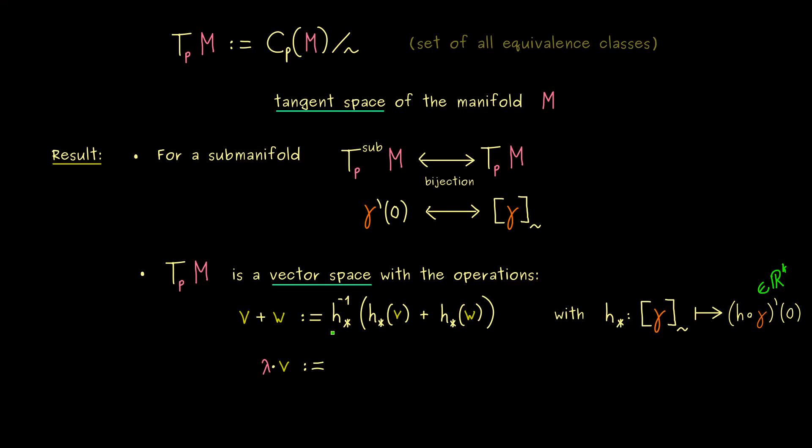So you have to show, it does not matter which chart h you choose. Okay, and now it might not be a surprise for you, that we can do the same with the scalar multiplication. So first go to the lower level, scale the vector and then go back again. Okay, and with that we have it. Now you know the definition of this new vector space we call the tangent space of the abstract manifold M. And what we can exactly do with that we will see in the next videos.